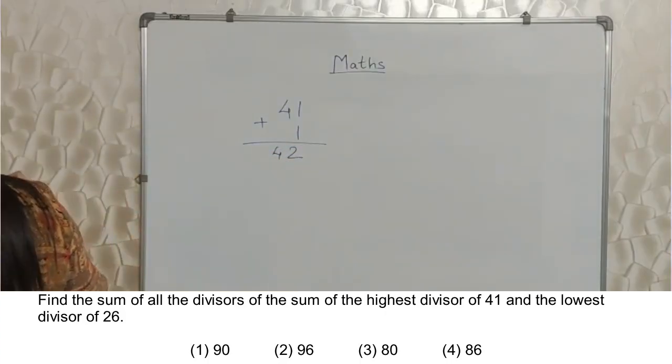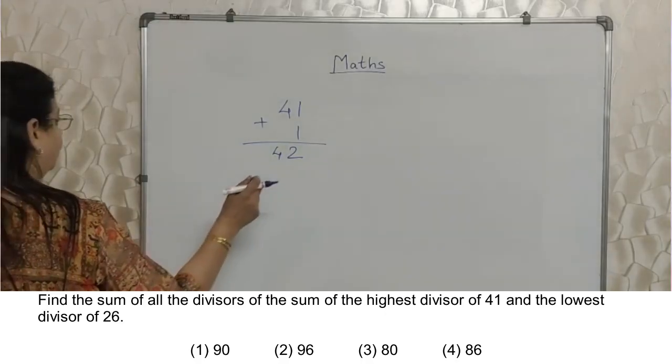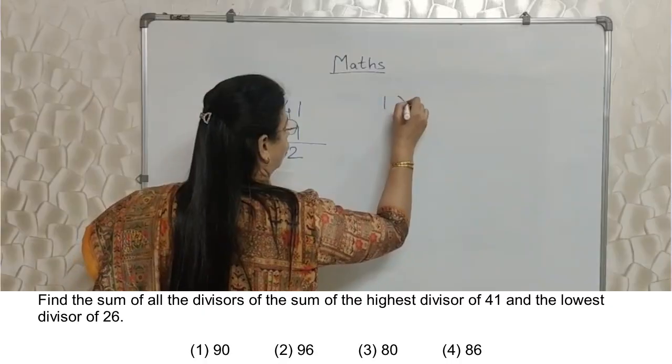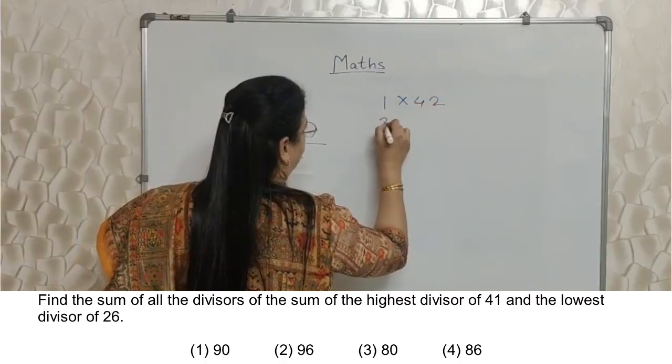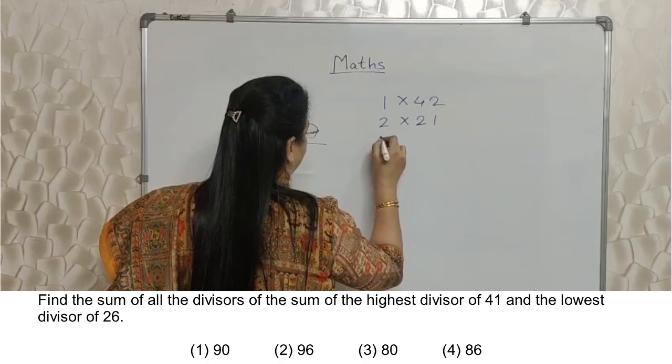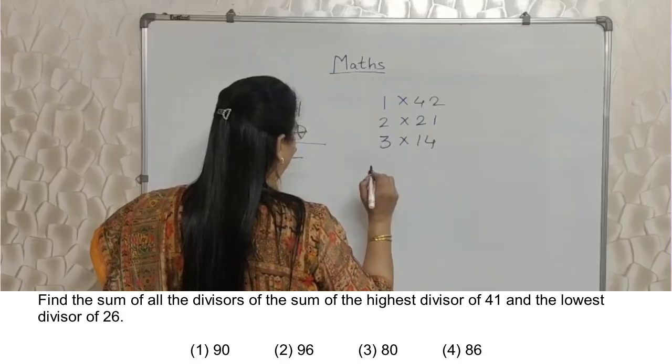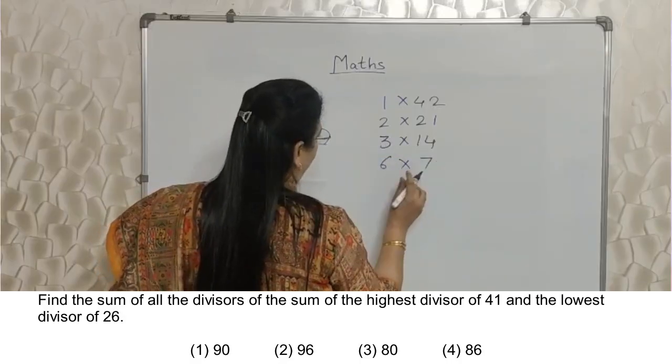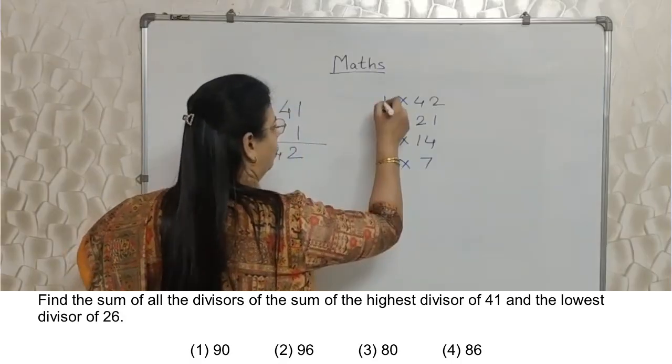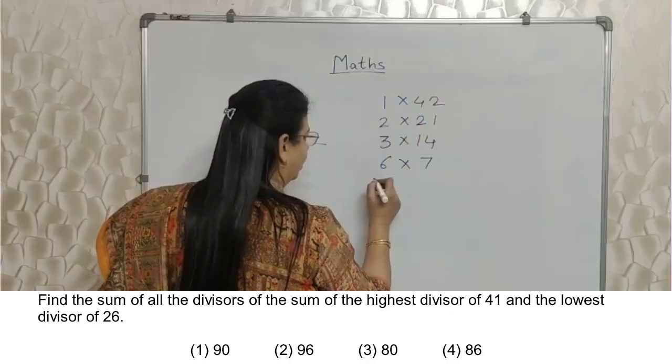Again you see what they are asking. They are asking the sum of all the divisors of this number. 42 has these divisors: 1 into 42, 2 into 21, then 3 into 14, 4 won't go, 5 won't go, 6 into 7. When numbers are consecutive it means all numbers may have been taken care of. So now we'll add these.